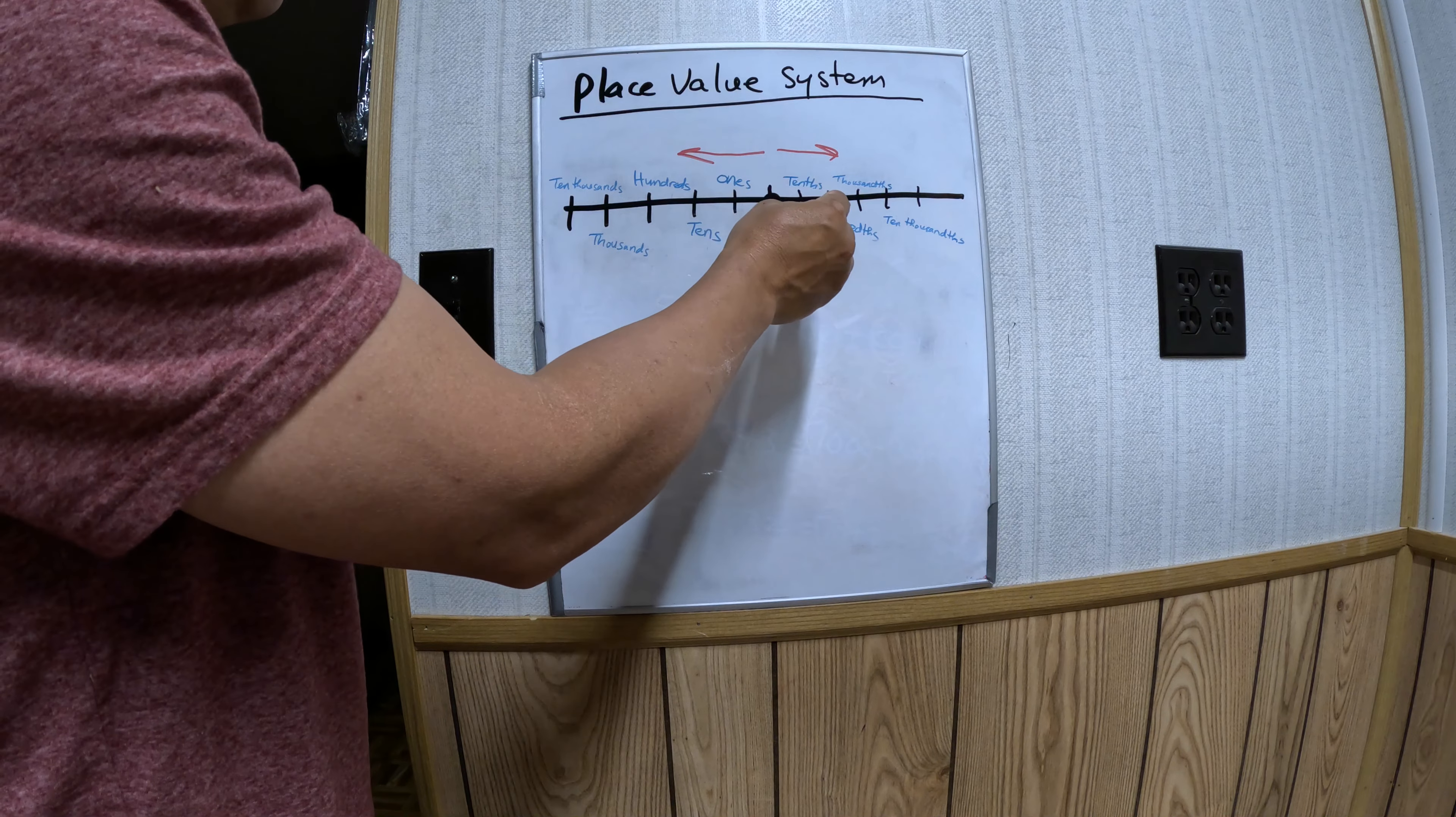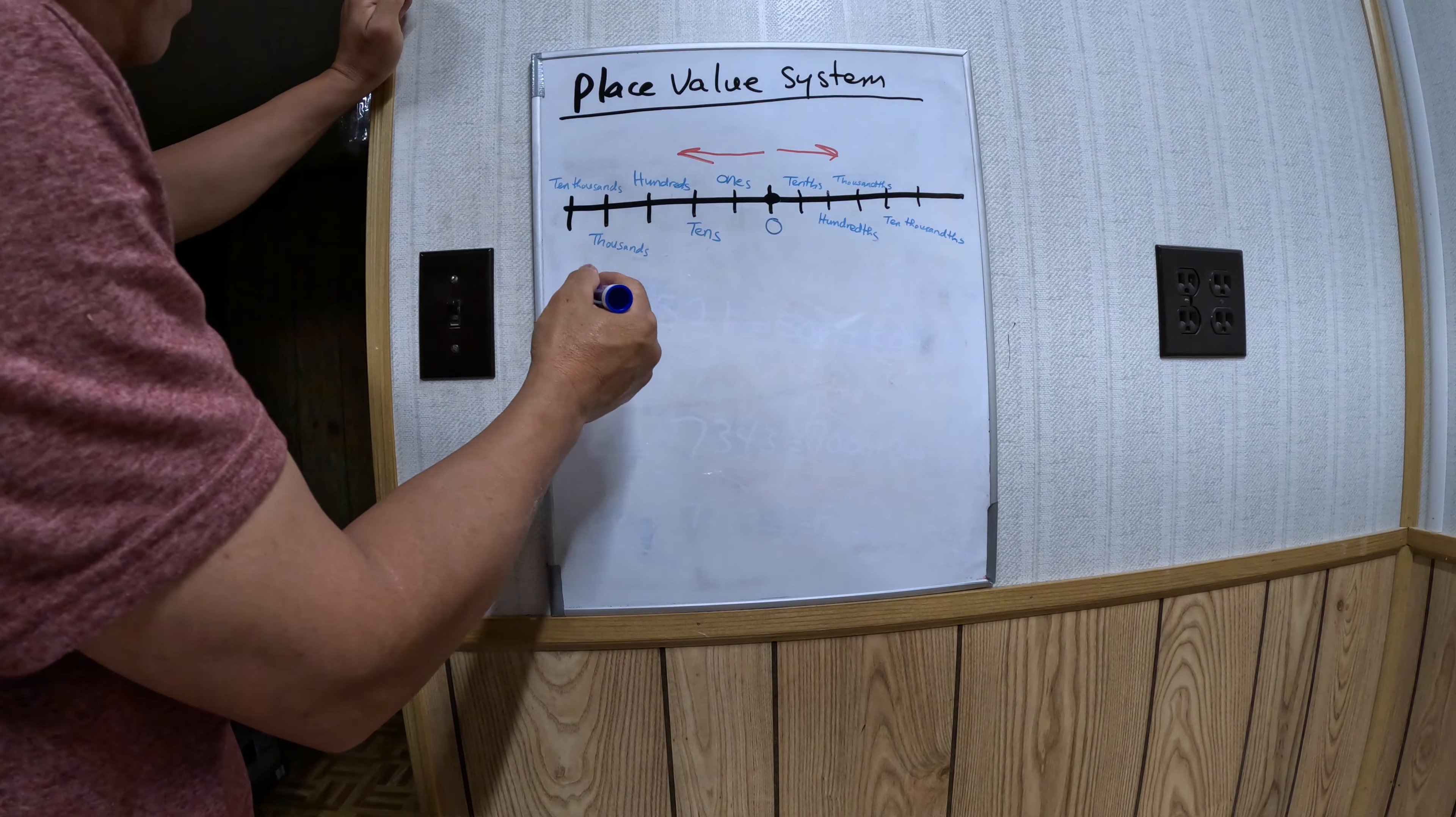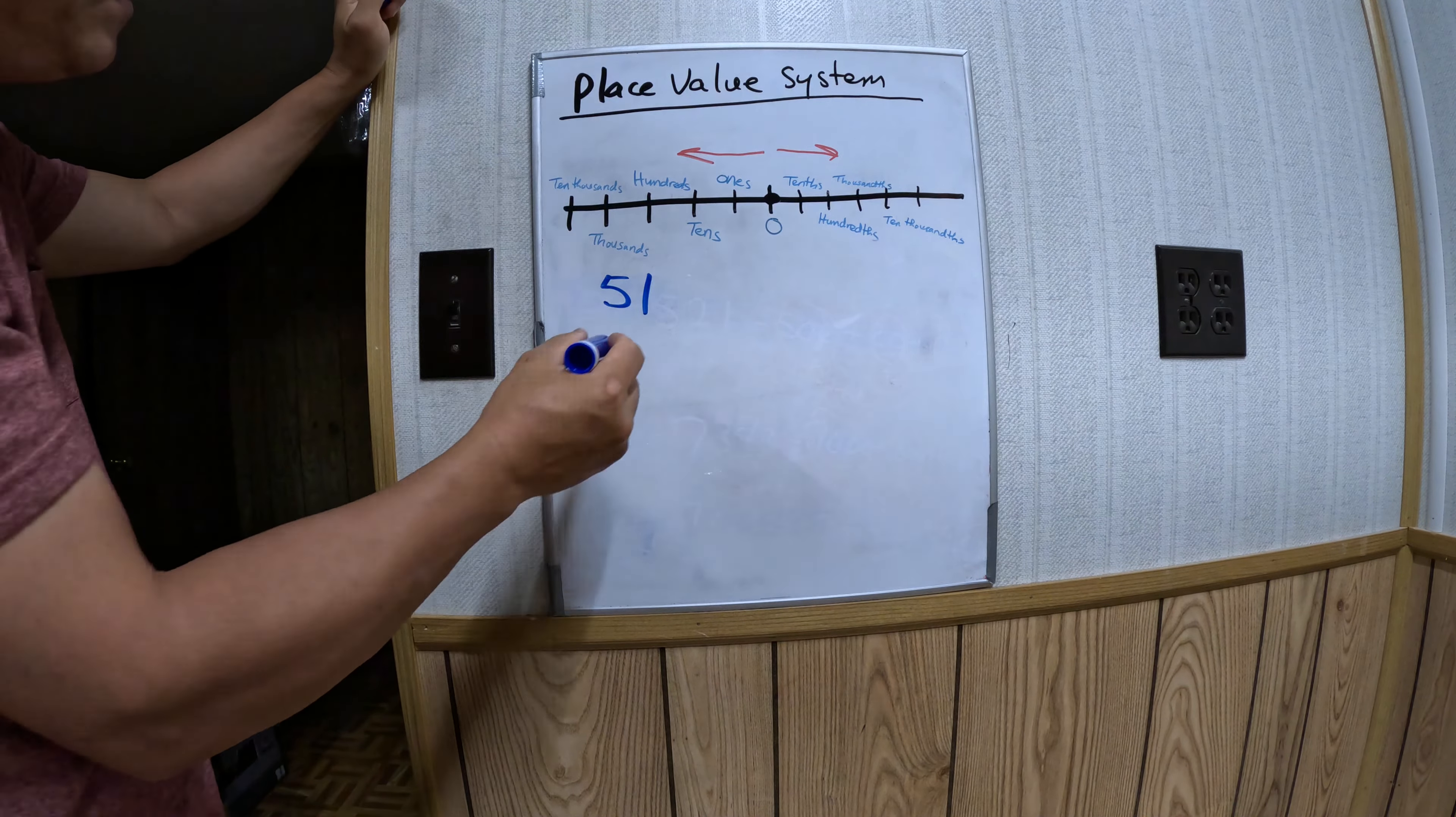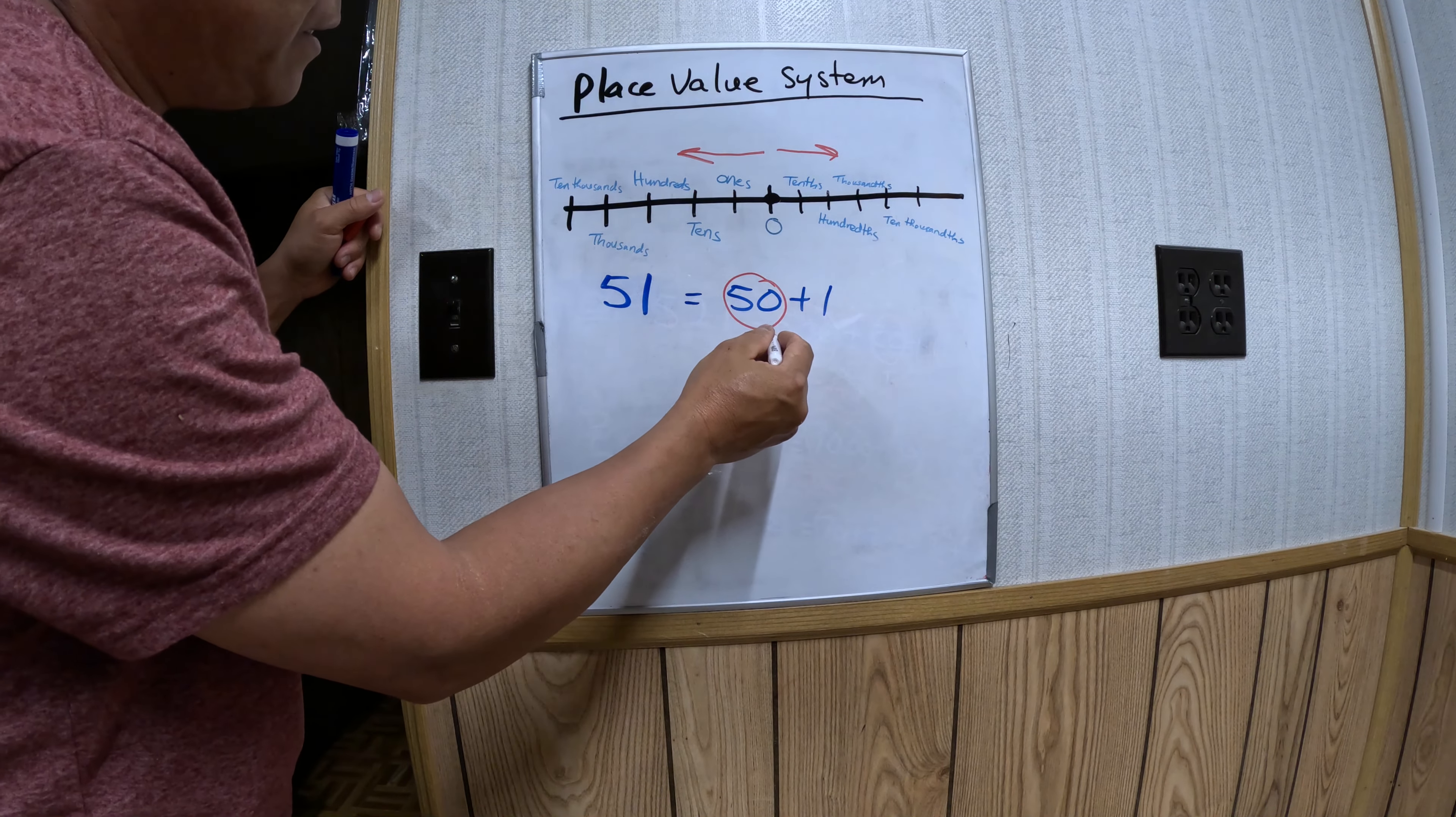Let's say you have 51. What does that mean? It means 50 plus 1. As you can see here, this is the tens place and this is the ones place.